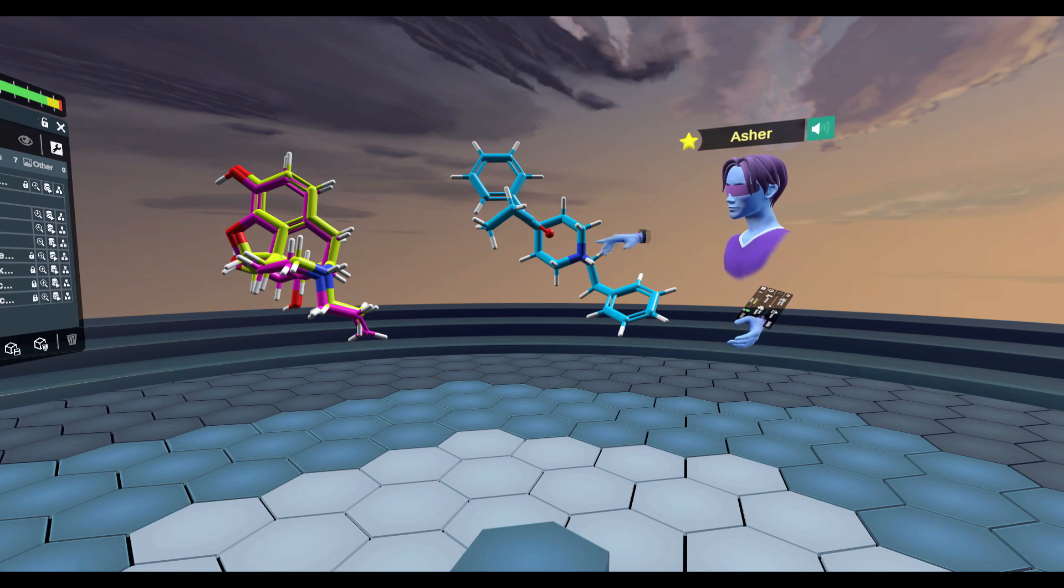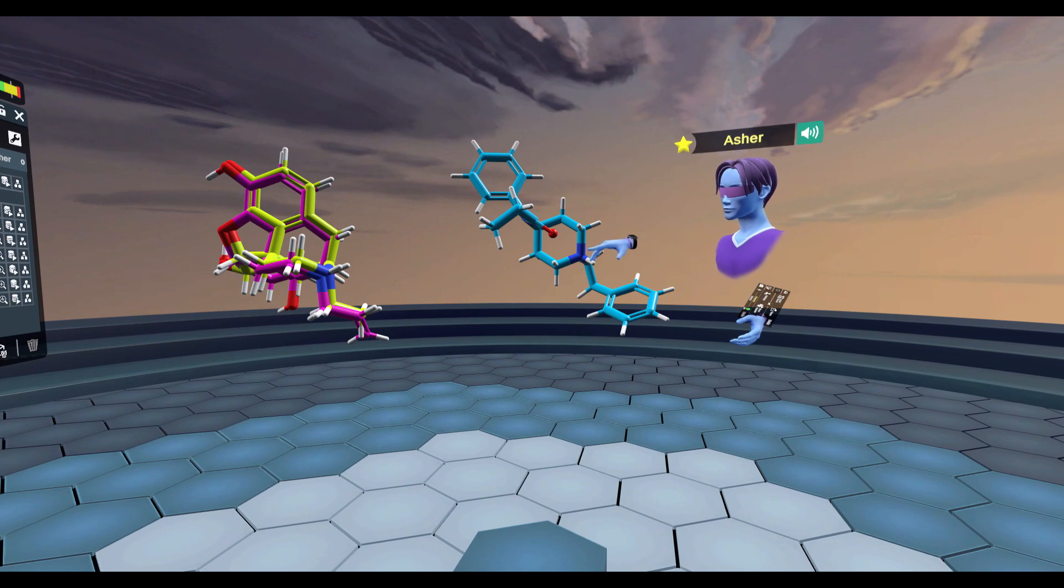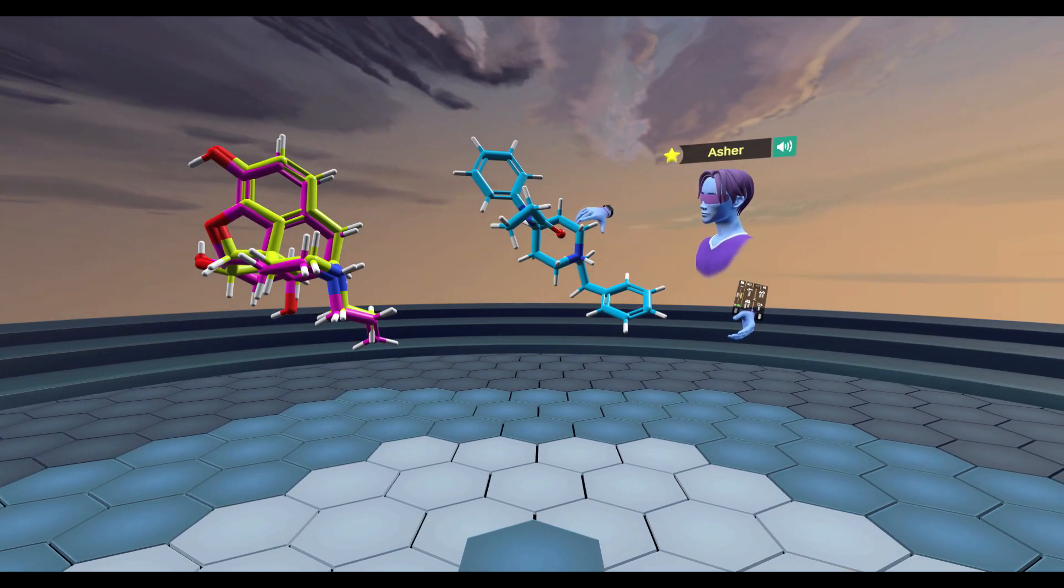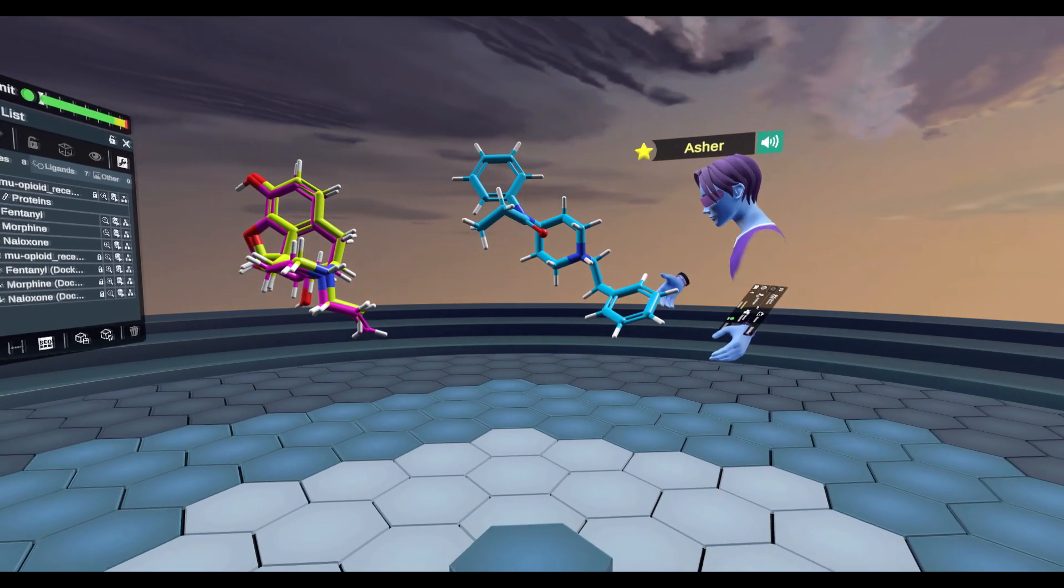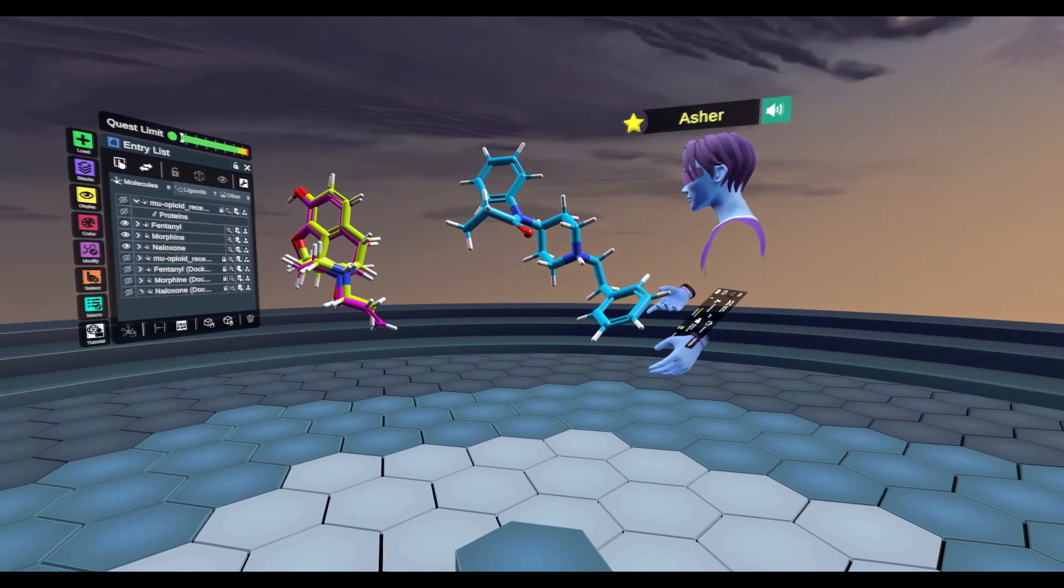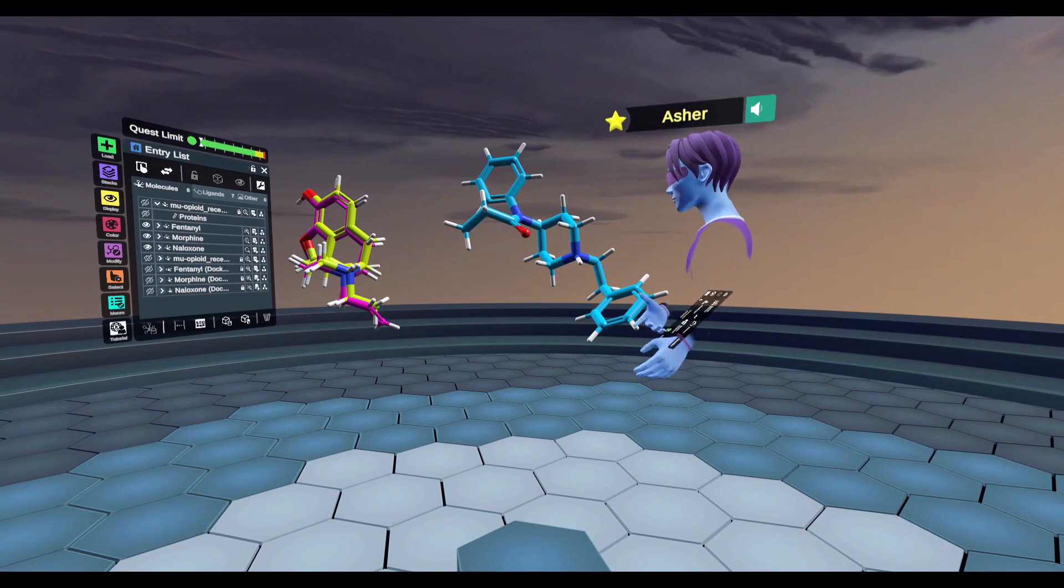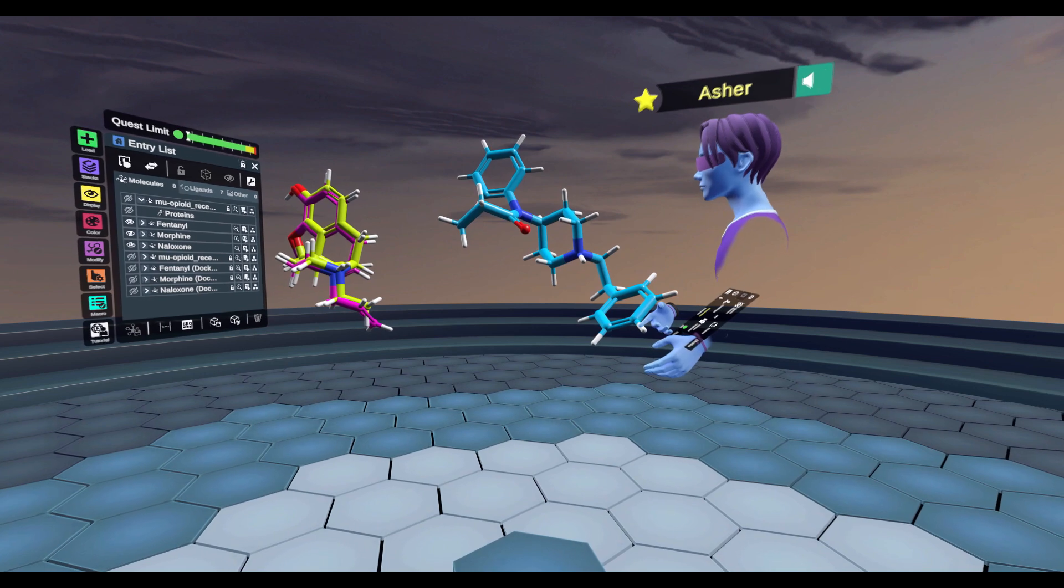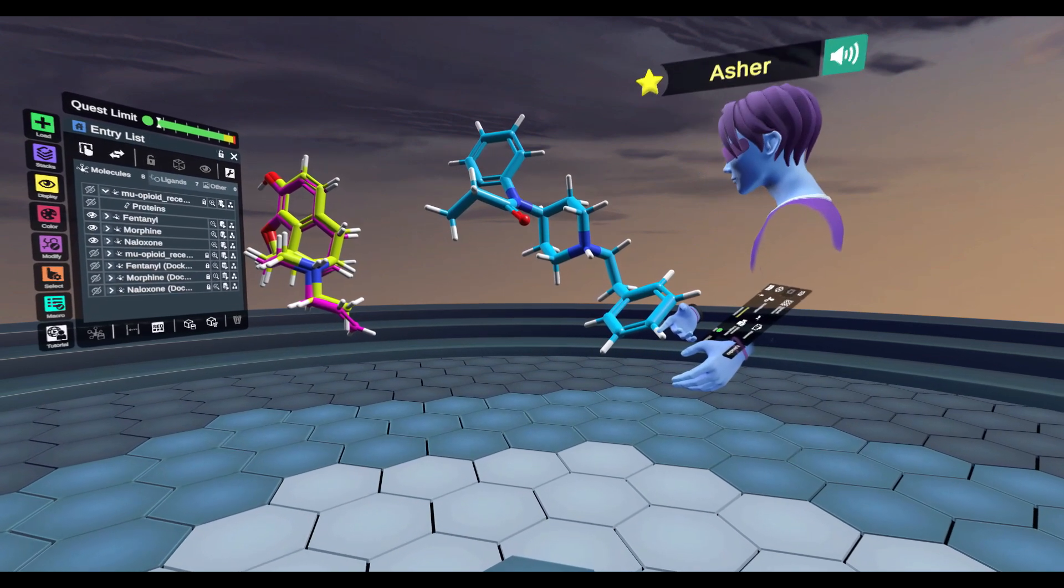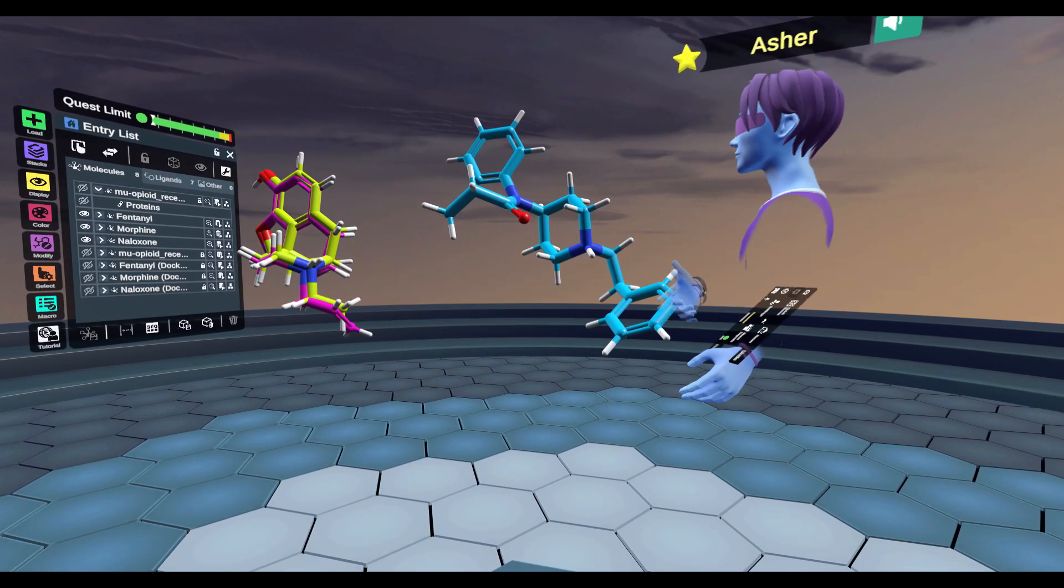So now that we have morphine and naloxone overlaid on top of one another, the reason I overlay those is because those two structures are really similar. When we get to other opiates, this one right here is actually fentanyl. You guys have probably heard of fentanyl. Fentanyl overdoses are definitely a problem.